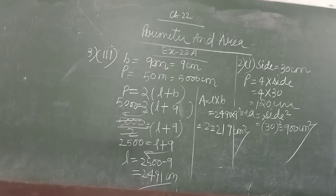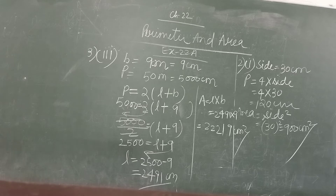Now, fourth question. The area of the rectangle is 1 hectare — first convert it into metres squared. Breadth is given; find the length. This is done the same way as the third question.